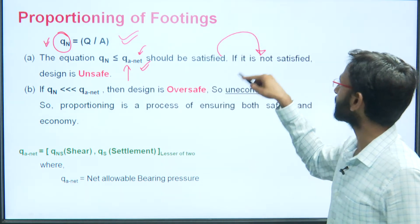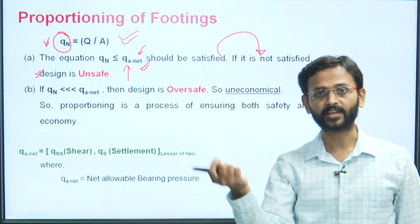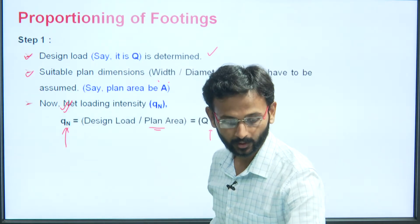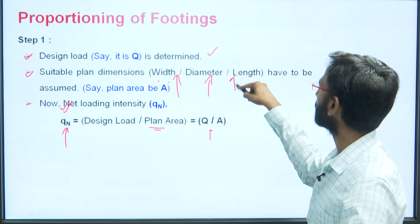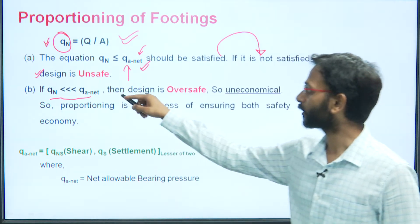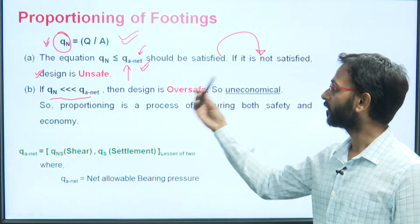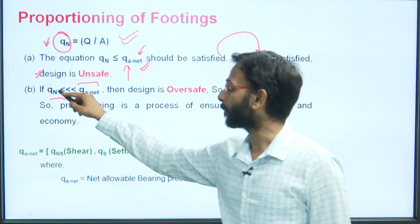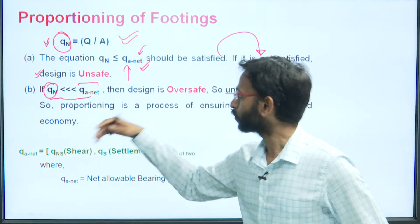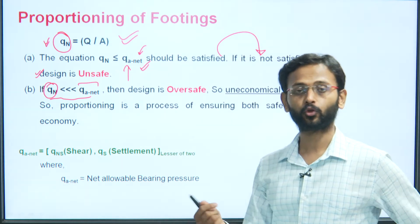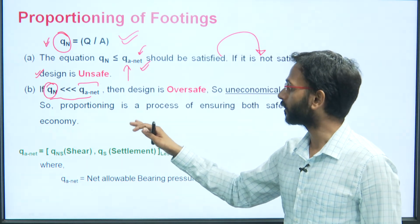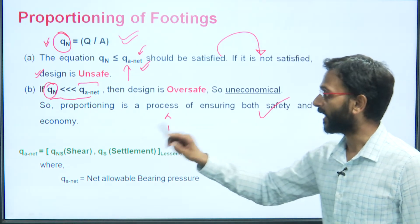If the equation q_n ≤ q_allowable is not satisfied, the design is unsafe and must be redesigned — different width, diameter, or length must be assumed and the plan area changed. Conversely, if q_n is very much less than q_allowable, the design is oversafe and uneconomical — too much material is being used. The proportioning of the footing is the process of ensuring both safety and economy.